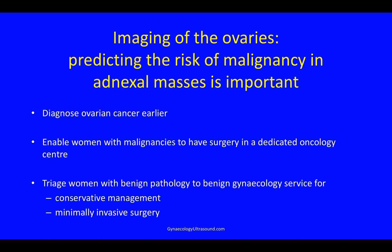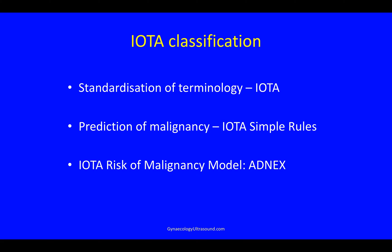Imaging of the ovaries. Predicting the risk of malignancy in adnexal masses is very important so that you can diagnose ovarian cancer earlier and enable women with a malignancy to have surgery in a dedicated oncology centre. Also you can triage women with benign pathology out to benign gynaecology for potentially conservative management or minimally invasive surgery. In this talk I will discuss the standardization of terminology using the IOTA definitions, the prediction of malignancy using IOTA simple rules, and the latest IOTA risk of malignancy model called ADNEX.